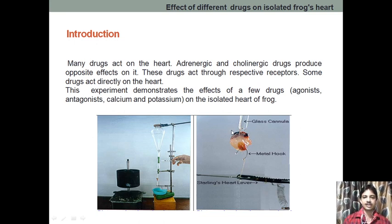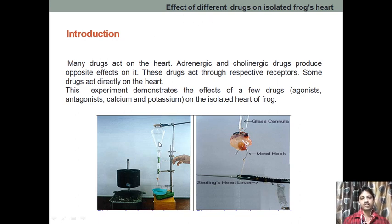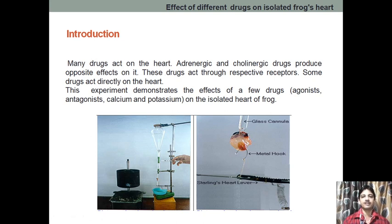When using the Sterling heart lever, we will get this type of graph. After performing one experiment, we wash out the drug by allowing physiological solution to flow, and then we administer the other drug. This experiment allows us to find the effect of different drugs on the isolated frog heart, and we are going to see one by one what the effects of different drugs are.